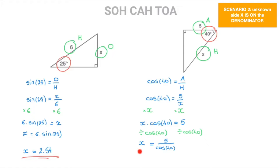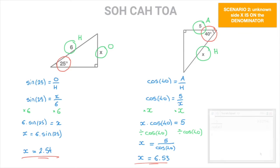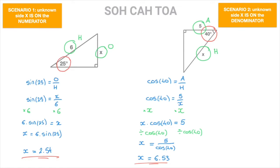At this stage we have an expression for X. All we need to do now is use our calculators to evaluate 5 divided by cosine of 40. And in doing so, rounding to two decimal places, we find that X is equal to 6.53. And that's the final answer. And so those are the two scenarios that we want to make sure we know how to deal with when looking for unknown side lengths in right-angled triangles. And that's it for this tutorial.